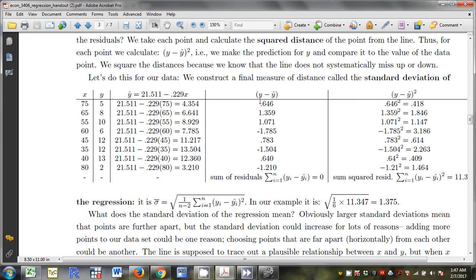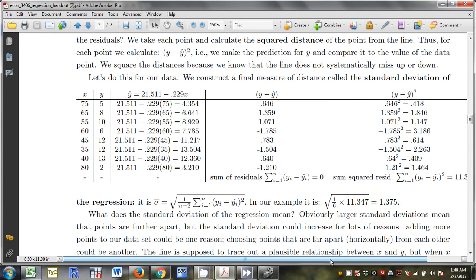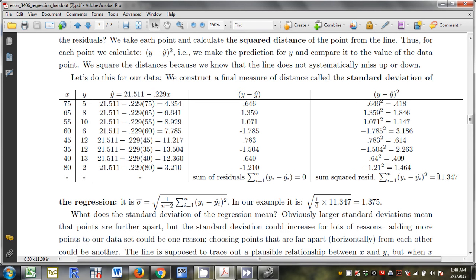So if I take this 5, I subtract 4.354, I get .646. If I take this 8, subtract this 6.641, I get 1.359. And so on and so forth. But if you look, the sum of residuals adds to zero. That's by construction. The line does not systematically miss up, nor does it systematically miss down. Now let's say I take a look at the squared residuals. I'm just going to square all the numbers. The sum of squared residuals, and this is how far all of the data are from the line as converted to positive penalizing large deviations. It's 11.347.